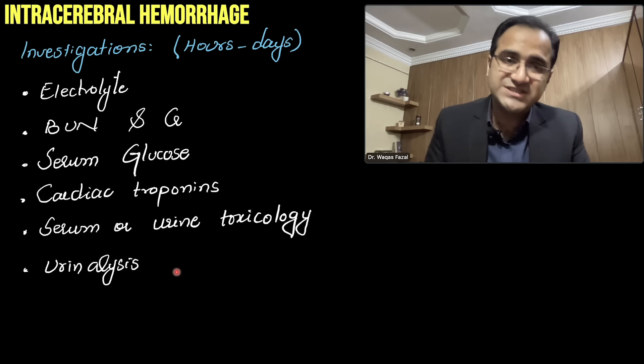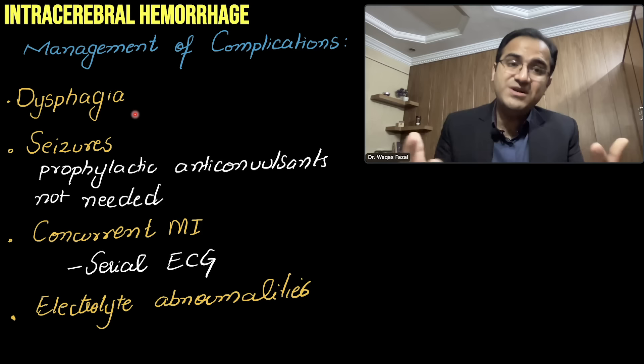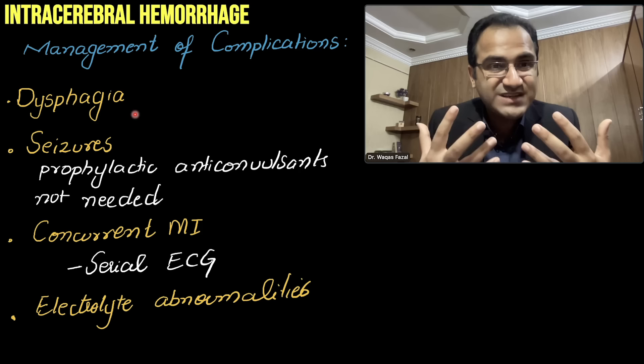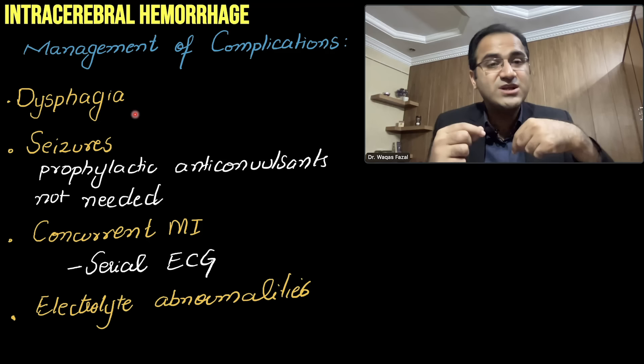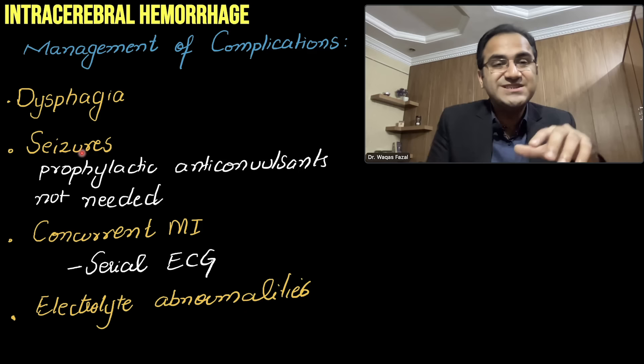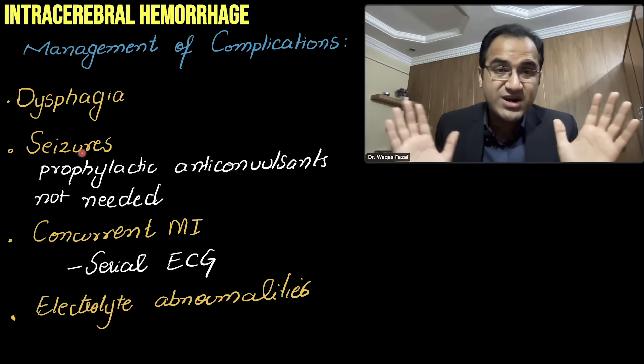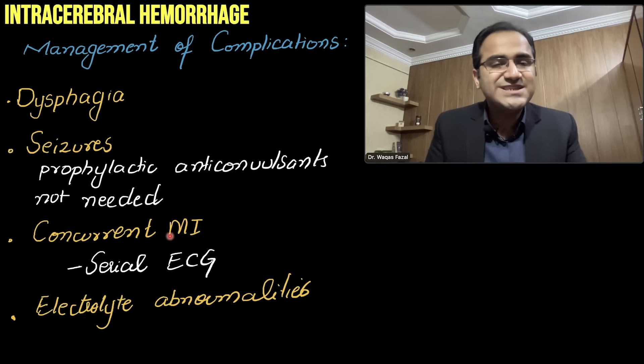Stroke patients are chronic patients who develop complications from prolonged immobility. Always assess for dysphagia and check whether the gag reflex is intact. If the gag reflex is absent, do not give anything orally — pass an NG tube for a short period or consider enteric feeding through a gastrostomy. Give anticonvulsants only if the patient develops seizures; prophylactic anticonvulsants are not advised.